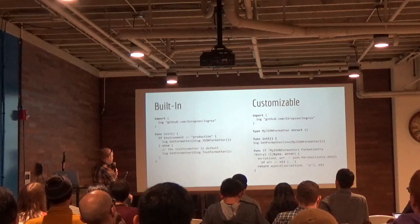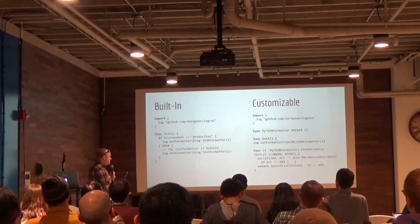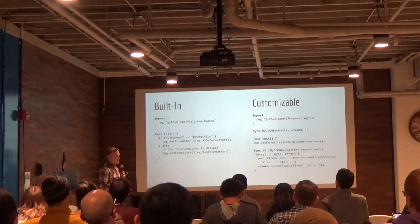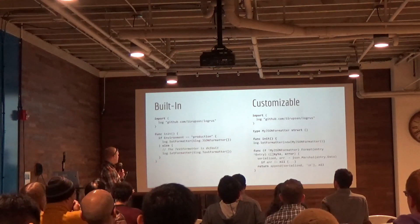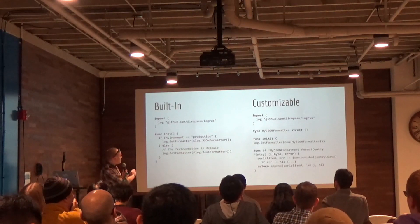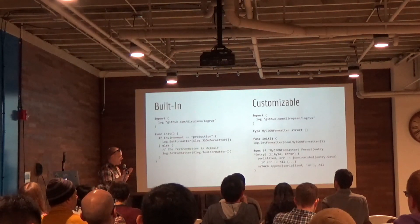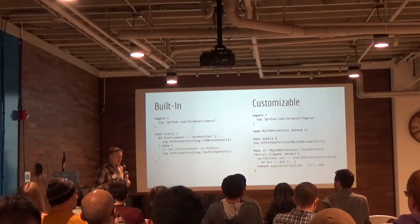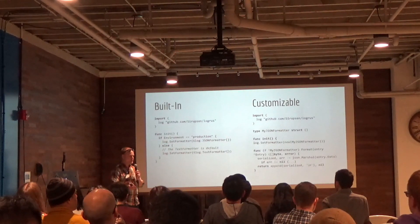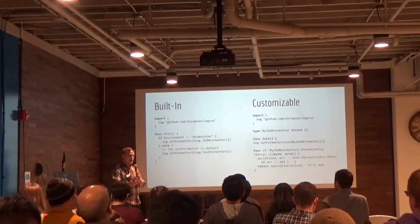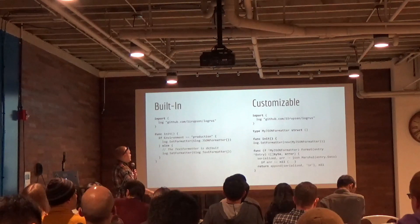Built-in, it has some formatters: a JSON formatter and a text formatter. The text formatter is key equals value, so it's still pretty straightforward. But it's also very customizable in that it defines an interface for what a log entry should look like, and then you can customize it as much as you want. That's kind of where the hooks come into play and how it's easier to log to destinations.